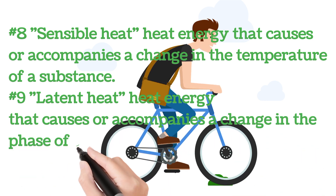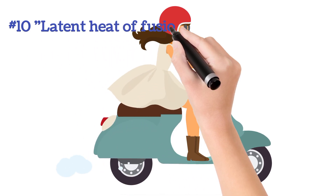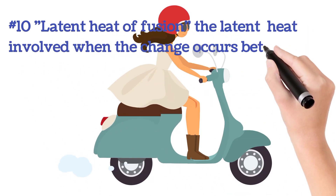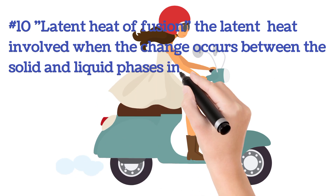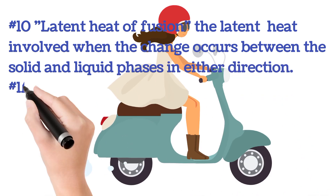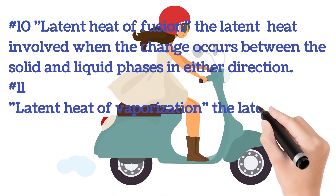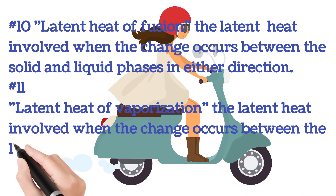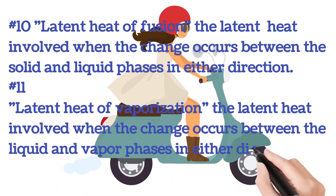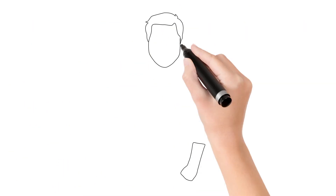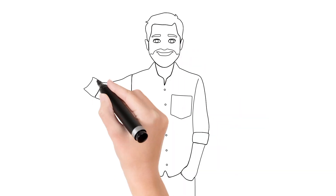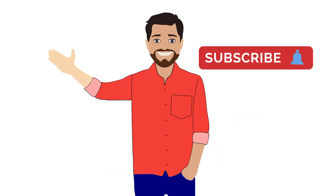Number nine: latent heat is the heat energy that causes or accompanies a change in the phase of a substance. Number ten: latent heat of fusion is the latent heat involved when the change occurs between the liquid and vapor phases in either direction. That's all for today — thanks for watching, God bless.